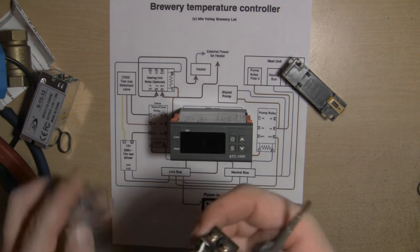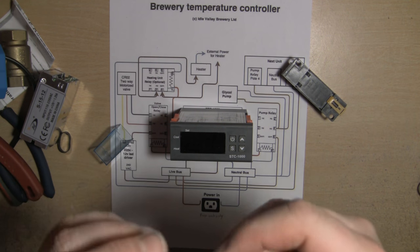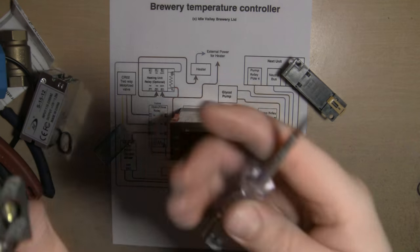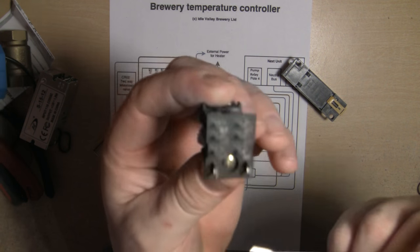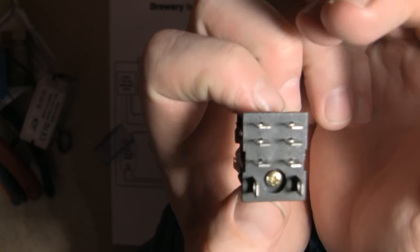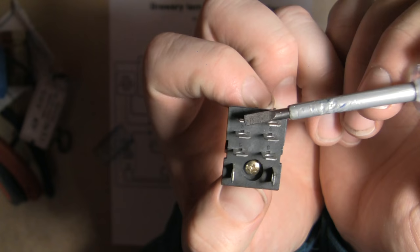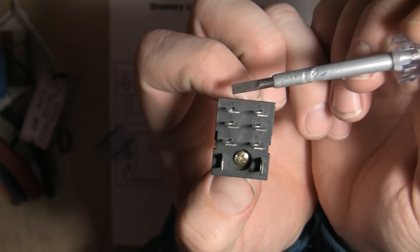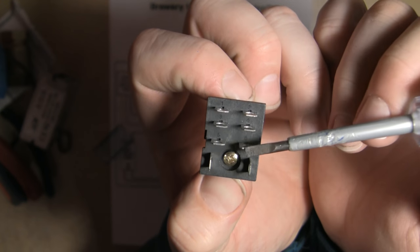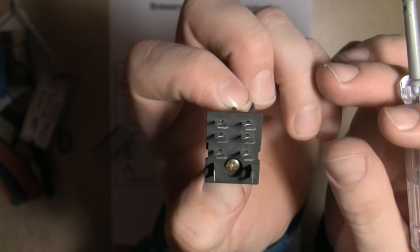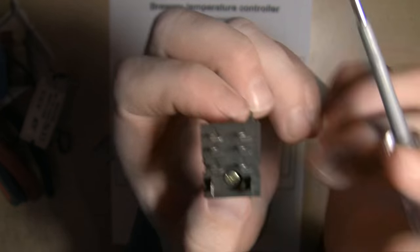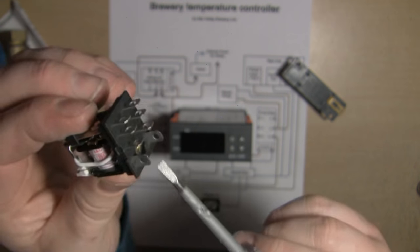You can see on the bottom here all of the contacts are numbered. We've got one, two, three, four, five, six, seven, eight. Seven and eight are your coil contacts.